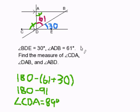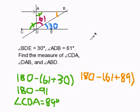So once again, we can do some simple subtraction to find this angle here. So it's 180 degrees minus 61 and 89. This one and this one.